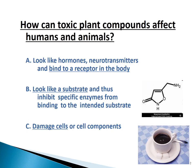An introduction to plant and fungi toxins. How can toxic plants and compounds affect humans and animals? A: Bind to a receptor in the body. B: Look like a substrate. C: Damage cells.